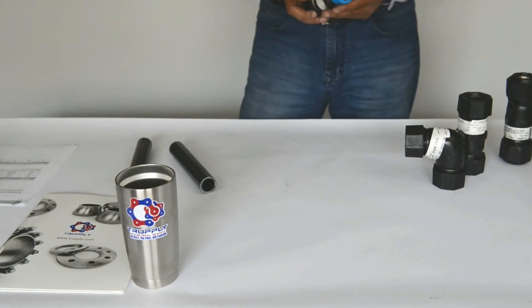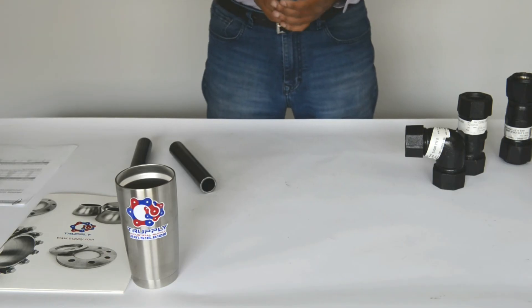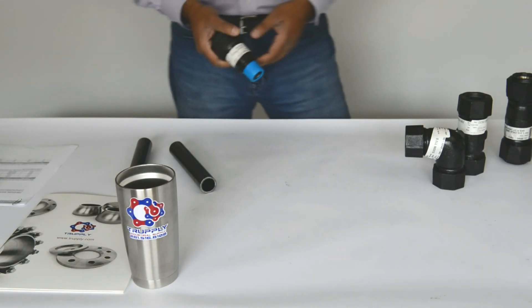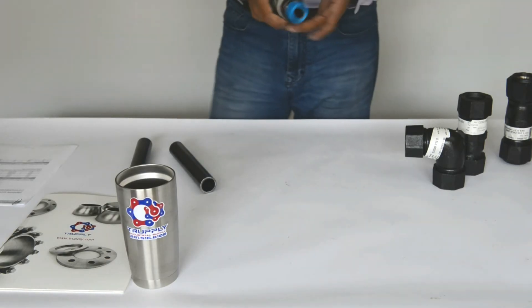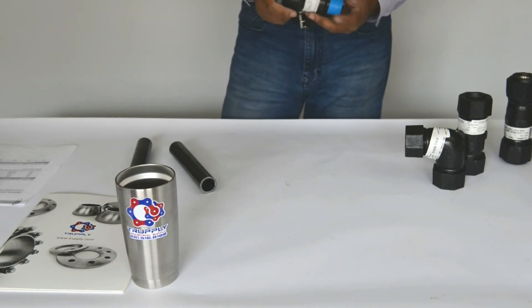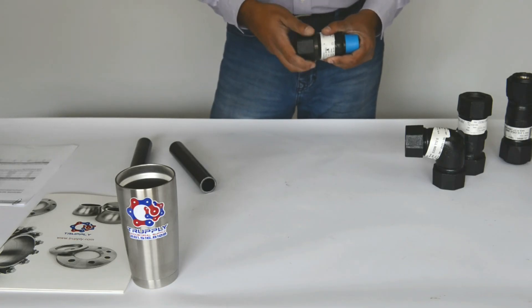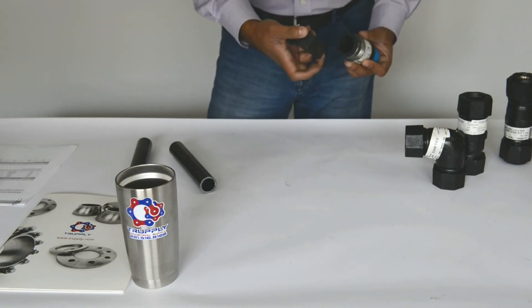This is a Style 90 compression male adapter. And as I showed you for the Style 65, it allows you to take a threaded connection and make a compression coupling out of it. So this has a cap on it, but this is a male thread. And you can thread it onto any coupling, any 3000 pound, 2000 pound, or a malleable iron coupling.